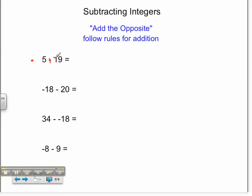I now follow my rules for addition, which state that when my signs are different, I subtract my two values, so 19 take away 5 is 14, and I keep the sign of the larger value, which would be negative.